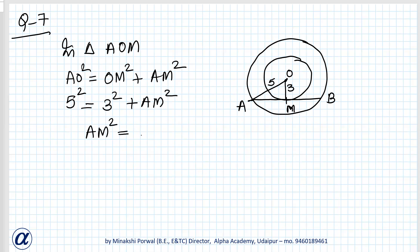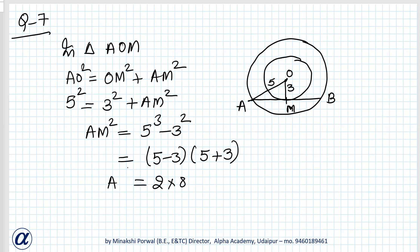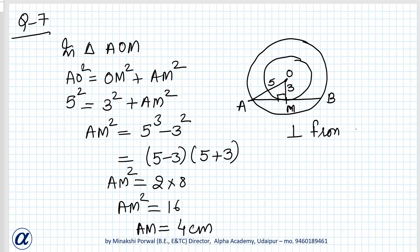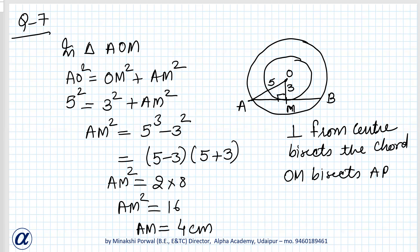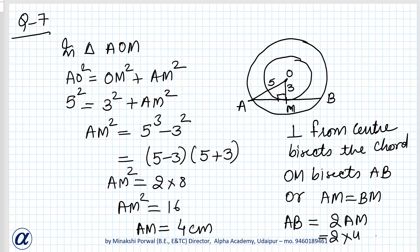AM² = 5² − 3² = (5−3)(5+3) = 2 × 8 = 16. So AM = √16 = ±4. Since it is a length, only positive value applies, so AM = 4 cm. The perpendicular from the center bisects the chord, meaning OM bisects AB, so AM = BM. Therefore AB = 2 × AM = 2 × 4 = 8 cm.